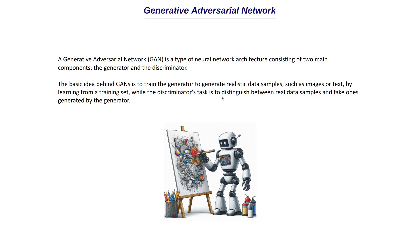The discriminator's task is to distinguish between real data samples and fake ones generated by the generator. Both the discriminator and the generator are individual neural networks and these two are trained simultaneously — separately but at the same time. The discriminator uses classification, and this feedback flows to the generator indicating that it could still identify the image as fake. So the generator should keep improving how it generates images.